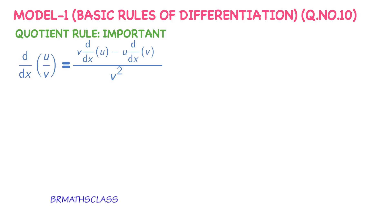To remember this formula there is a small trick: the derivative of u by v always starts with v. Remember it this way so that no confusion will come while applying the formula. The derivative of u by v equals v into derivative of u, minus u into derivative of v, divided by v squared.